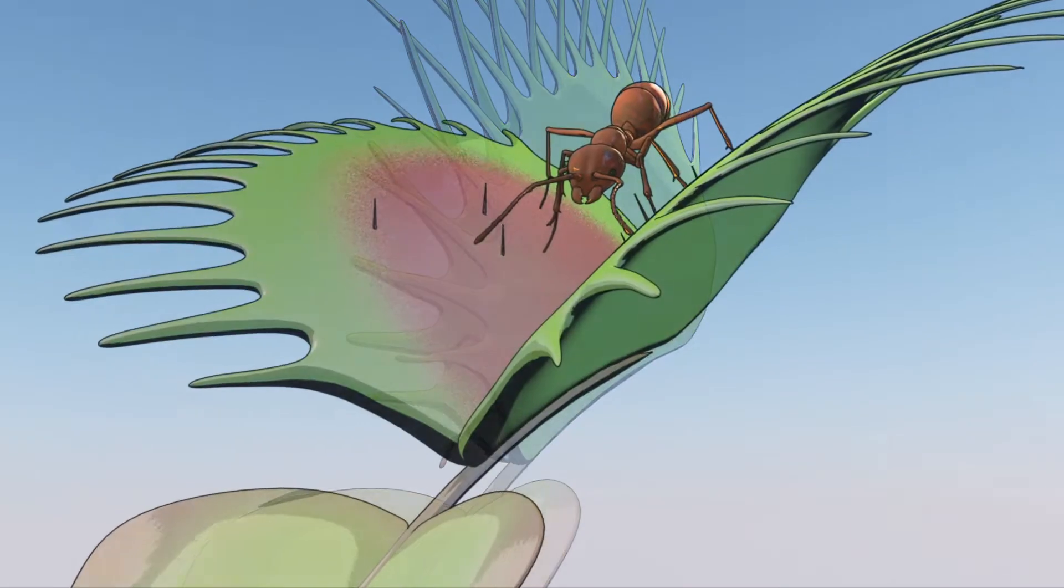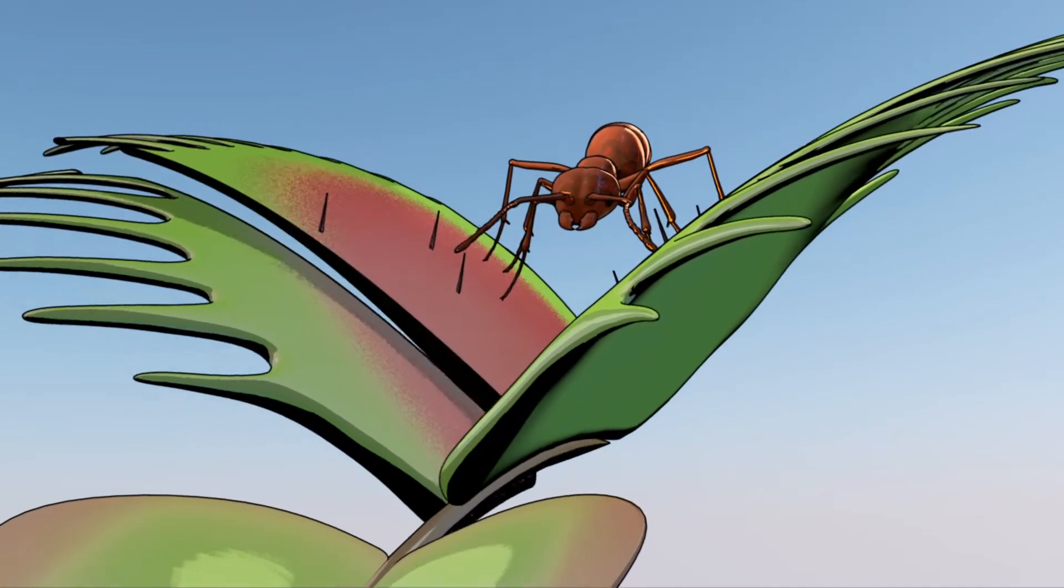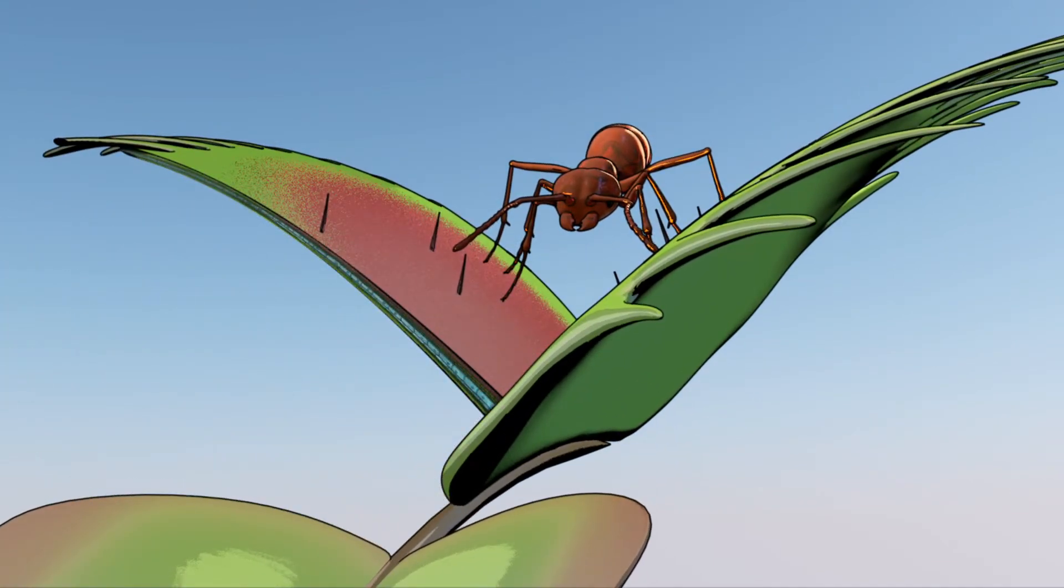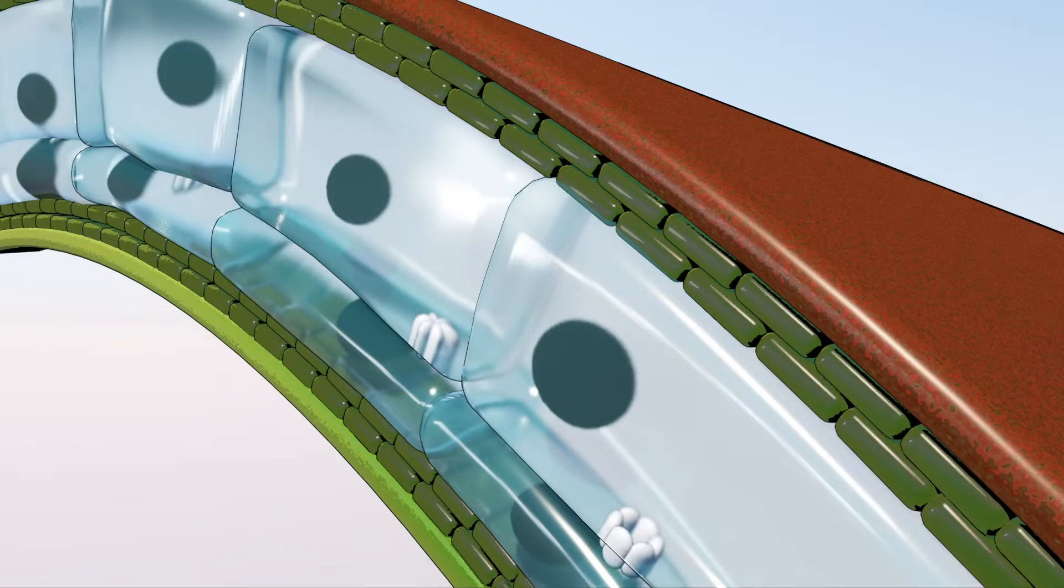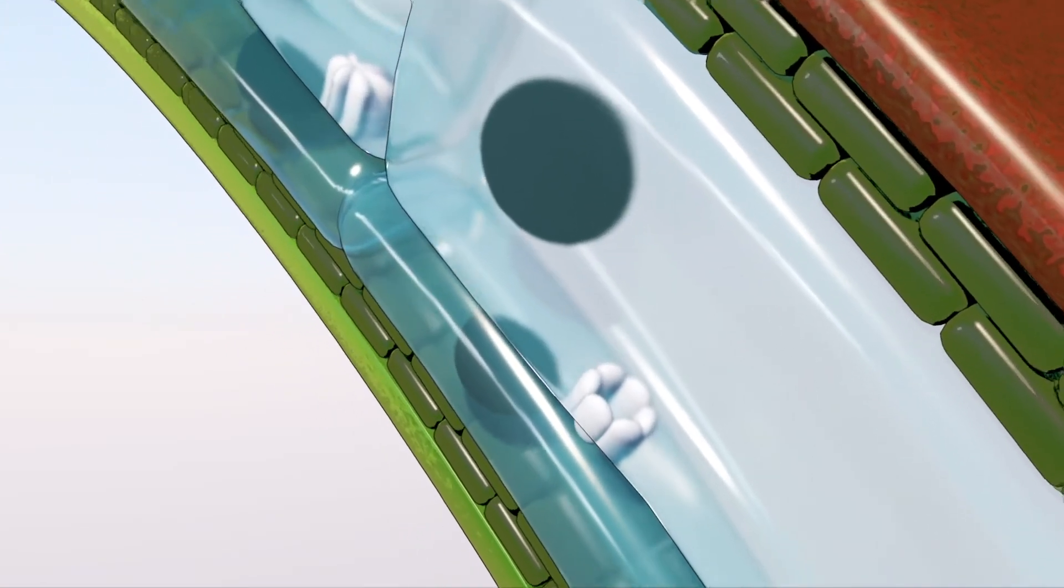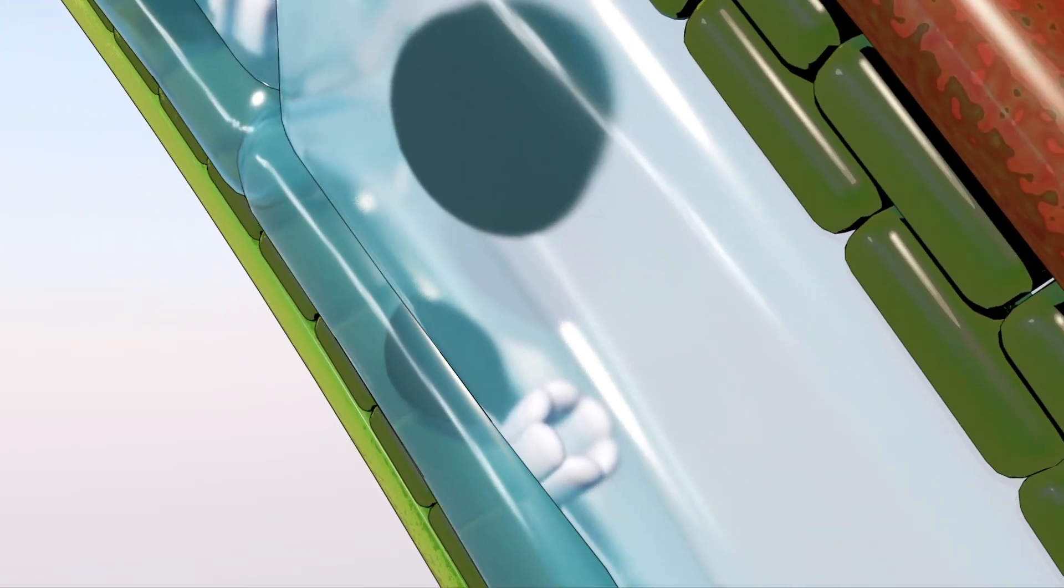But how do they close their lobes when they don't have any muscle? The lobes have two distinct layers connected by a large number of aquaporins, pores in cell membranes that allow water to flow from one cell to another.